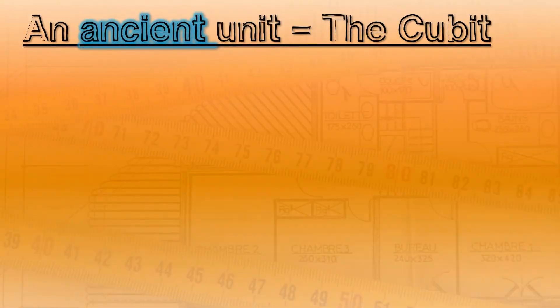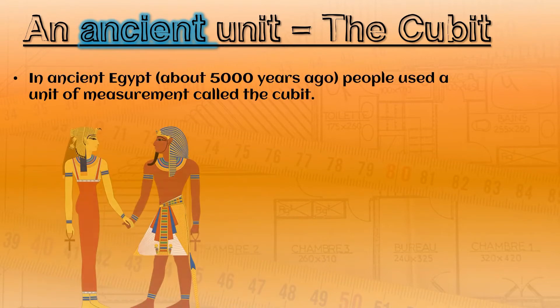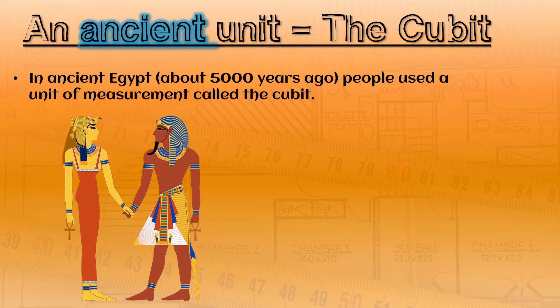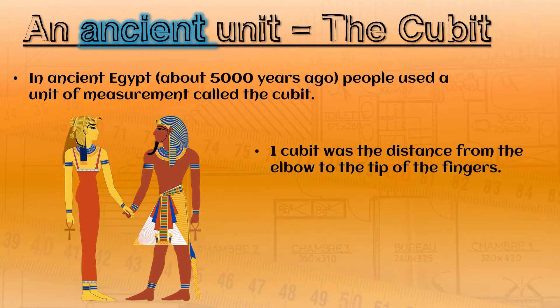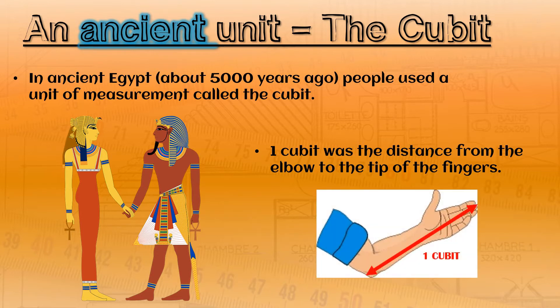So speaking of units, an ancient unit is the cubit. This unit was used in ancient Egypt about 5,000 years ago and one cubit was the distance from the elbow to the tip of the fingers. There we can see one cubit down a person's arm.